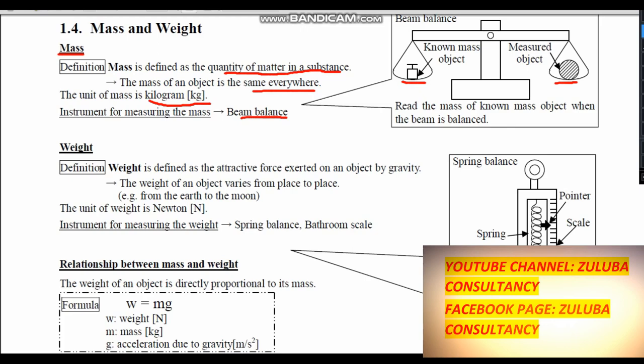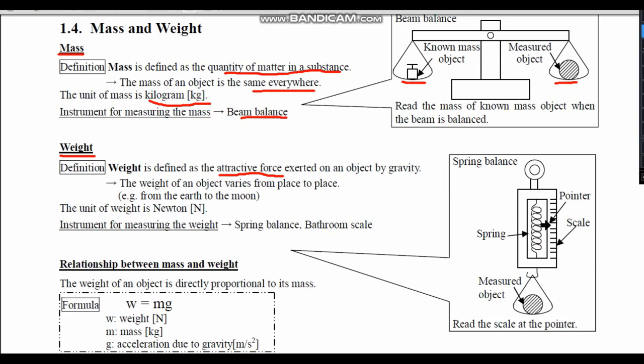Let's look at weight. Weight is defined as the attractive force exerted on an object by gravity. This object should be free to move and influenced by gravity for us to get the exact weight of that object.